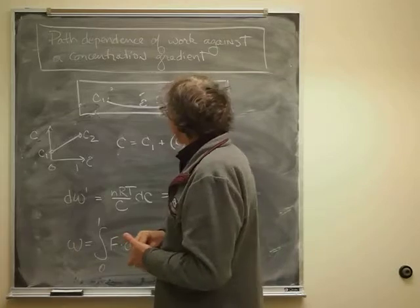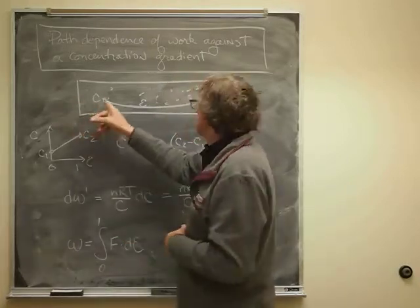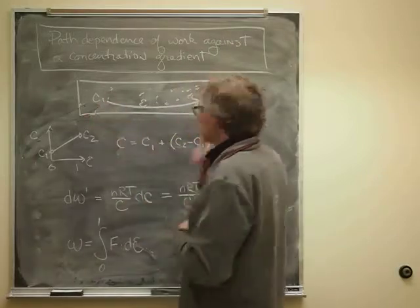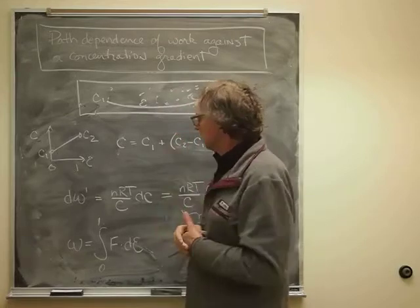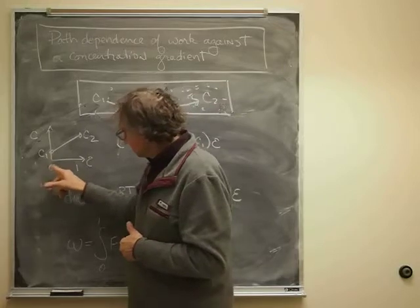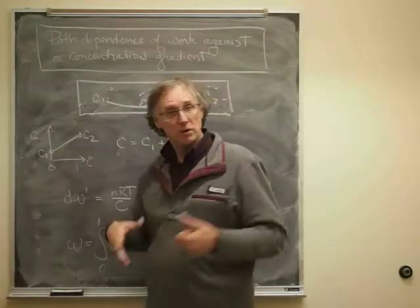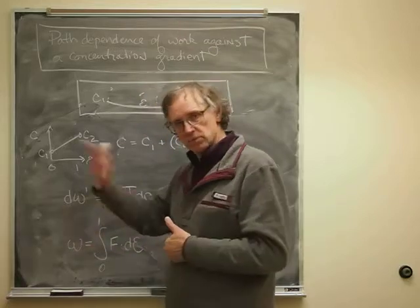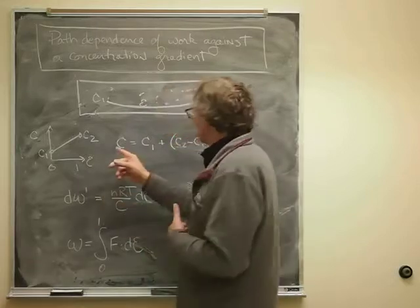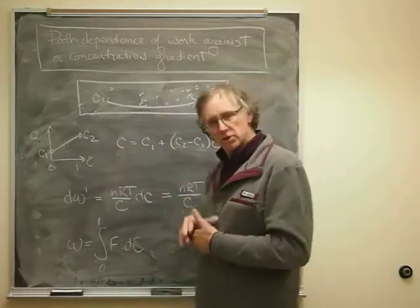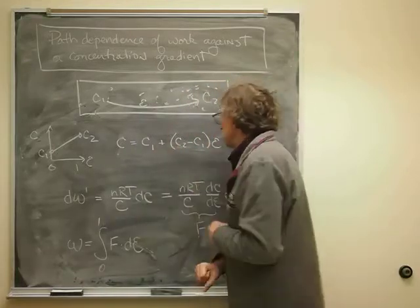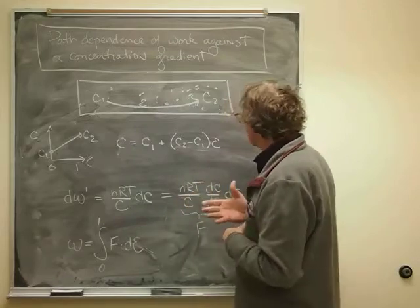One could imagine marking the path with a distance parameter called epsilon, where epsilon will be zero here and one when we arrive at our destination, which is the second concentration. On a graph of epsilon from zero to one, the concentration just keeps going up as a straight line. That would be given by this algebraic formula: the concentration as a function of epsilon would be C1 plus that difference times epsilon. If epsilon were zero, meaning we're at the start, then the concentration is C1.